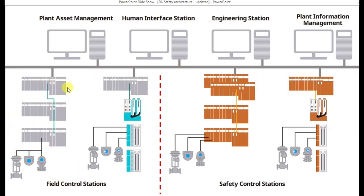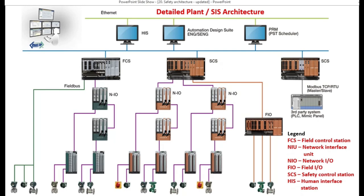Similar to the DCS control cards and other things, we also have the safety instrumented system processors, sensors, on-off valves, etc. All of them are connected through a plant control network — this is known as the plant control network, as we can see more clearly in the next picture.